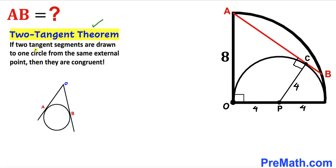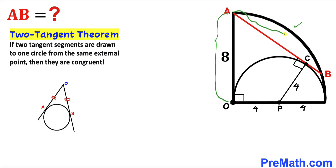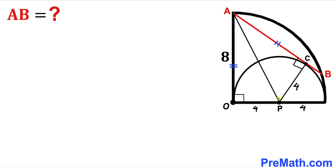Now let's recall the two tangent theorem: if two tangent segments are drawn to a circle from the same external point, then they are congruent. So in our case, tangent AO equals segment AC — therefore segment AC is equal to segment AO.